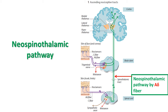From there, the second order neuron starts and crosses to the opposite side in front of the central canal, reaches the lateral funiculus, and ascends as the lateral spinothalamic tract — sometimes called the anterolateral or ventrolateral spinothalamic tract. It then ends in the ventral posterior lateral nucleus, or VPL nucleus, of the thalamus. From there, the third order neuron starts.